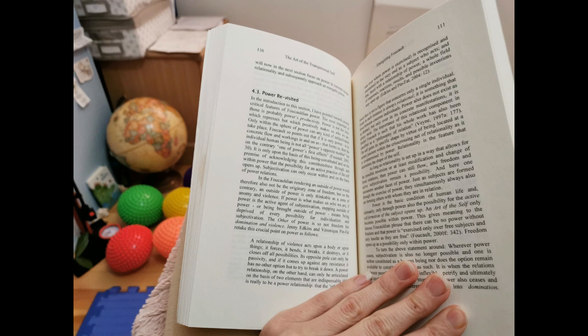A power relationship, on the other hand, can only be articulated on the basis of two elements that are indispensable if it is really to be a power relationship. That the other, the one over whom power is exercised, is recognized and maintained to the very end as a subject who acts. And that, faced with a relationship of power, a whole field of responses, reactions, results, and possible inventions may open up.